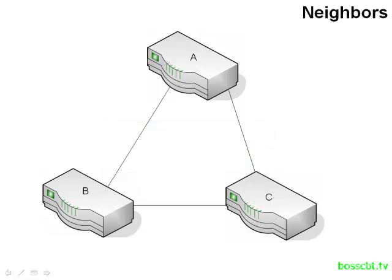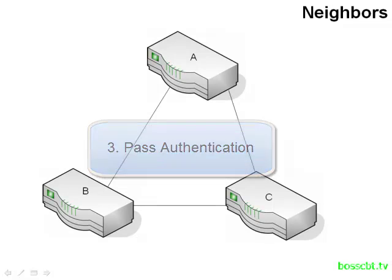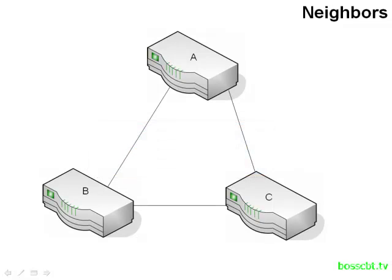The AS number requirement is somewhat similar to OSPF's approach to organizing a network using the area. The third requirement is if two routers are using authentication, they have to be able to authenticate with each other — the same passwords have to be configured on both routers. If those three requirements are met, the two routers become EIGRP neighbors.